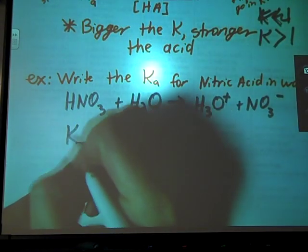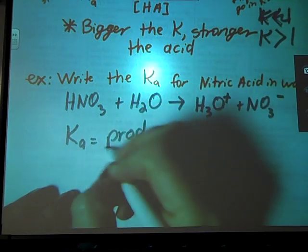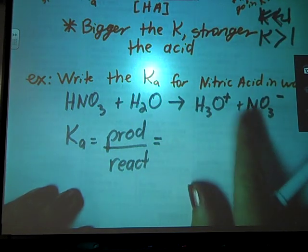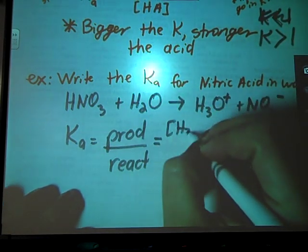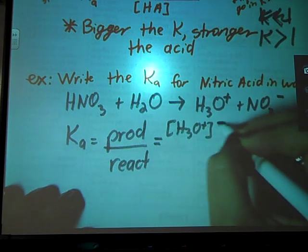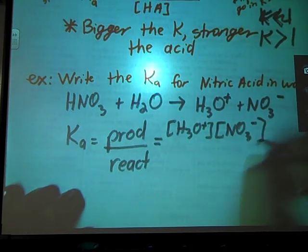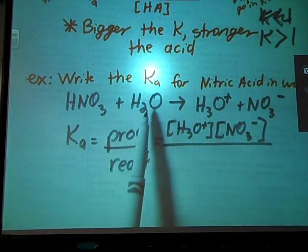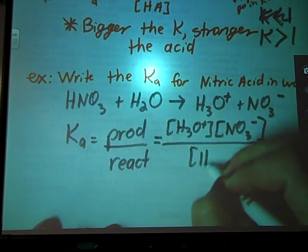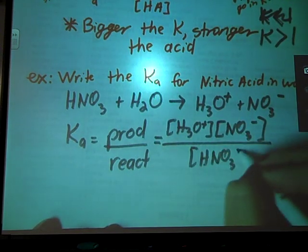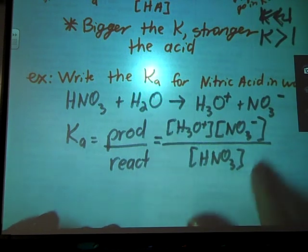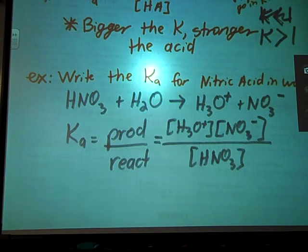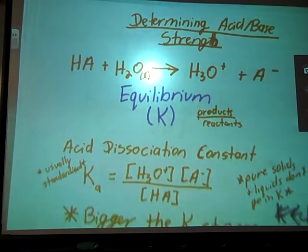My Ka, we said, was products over reactants. Our products are these two guys here. So concentration H3O+ times concentration NO3- divided by reactants. Liquids go on the bottom, but pure liquids don't get to go. So this calculation here would be my Ka for nitric acid in water. That's all for the acids.